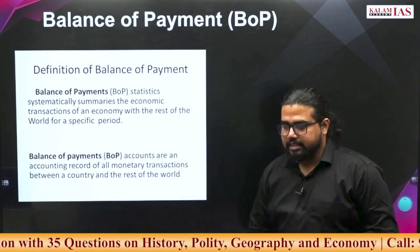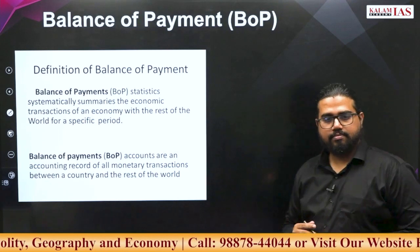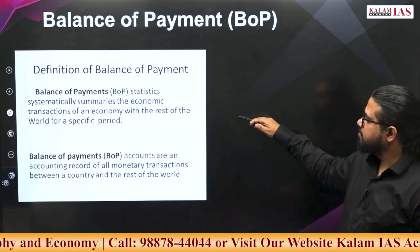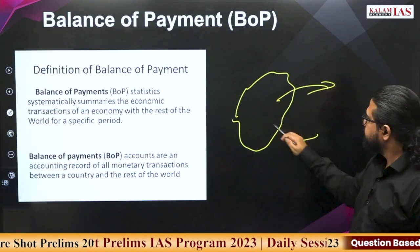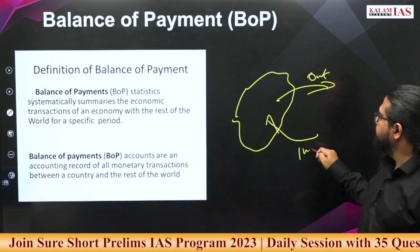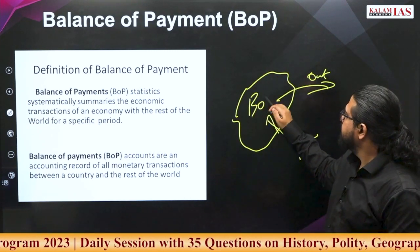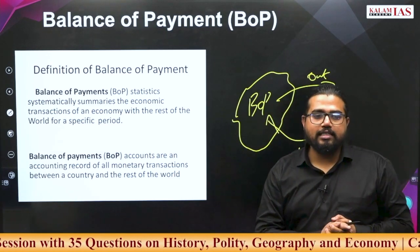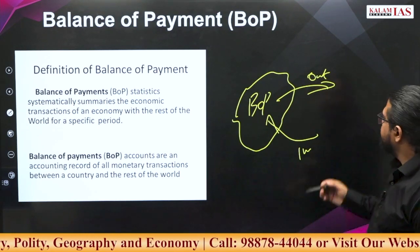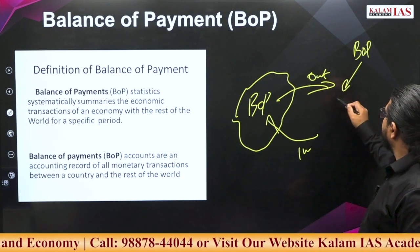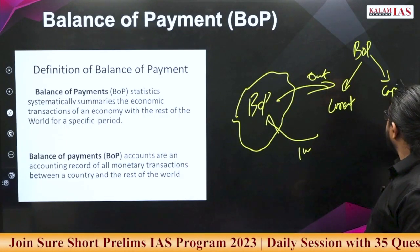Now we start our discussion on the external sector. What is Balance of Payments? If a country has transactions — how much is going out, how much is coming in for various transactions — the combined record of all these transactions in a given period of time is called the Balance of Payments. BOP components can be trade current-related account and capital-related.